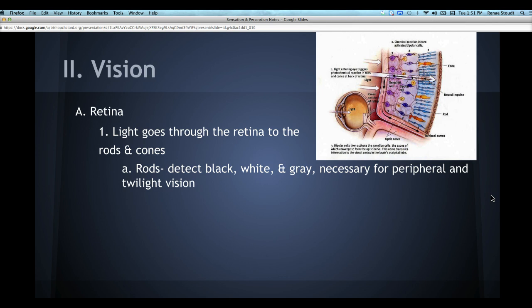Rods are also necessary for twilight vision. What's twilight vision? When it's kind of getting dark, and it's that time period where it's not quite light out anymore, it's not really dark yet. That twilight time period, that's when rods in your eyes are going to be most activated.